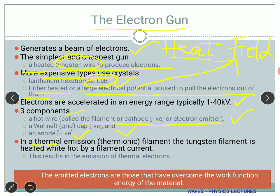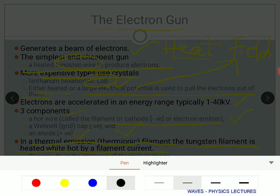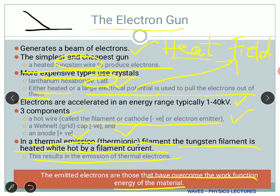For thermal emission — where you are heating — the tungsten filament is heated by filament current, applying a huge amount of current which causes the filament to heat up. When the filament gets heated it emits electrons called thermal electrons due to the temperature. These emitted electrons are those which have overcome the work function energy of the material — similar to the photoelectric effect where a metal surface ejects an electron when radiation of sufficient energy falls on it.